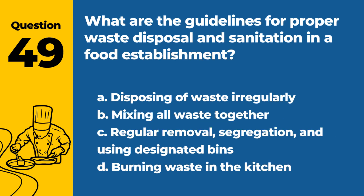Question 49. What are the guidelines for proper waste disposal and sanitation in a food establishment? A. Disposing of waste irregularly. B. Mixing all waste together. C. Regular removal, segregation, and using designated bins. D. Burning waste in the kitchen. Answer: C. Regular removal, segregation, and using designated bins. Proper waste disposal and sanitation involve regular removal of waste, segregation of different types of waste, and using designated bins.